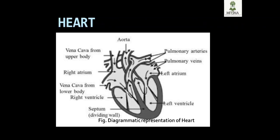The diagrammatic representation of the heart shows the right atrium, left atrium, right ventricle, left ventricle, and aorta. The pulmonary arteries and pulmonary veins are connected to the heart and lungs.